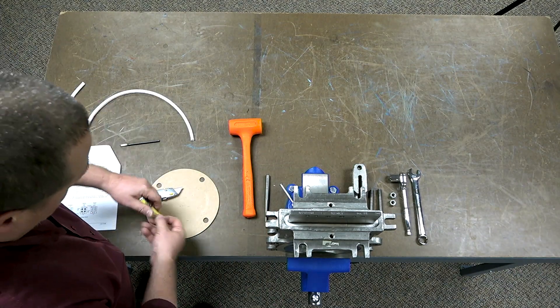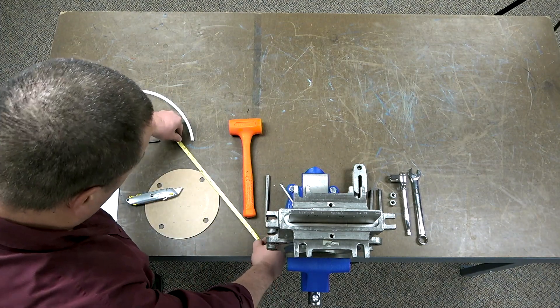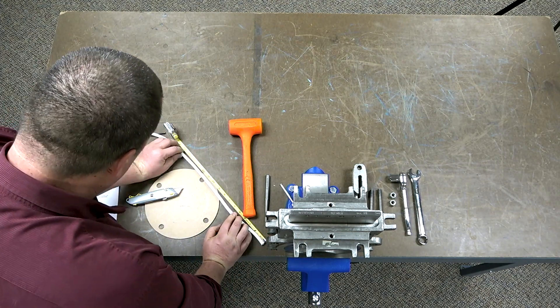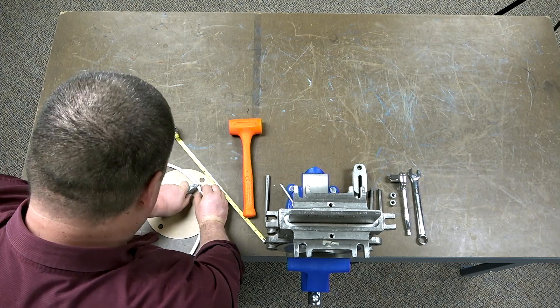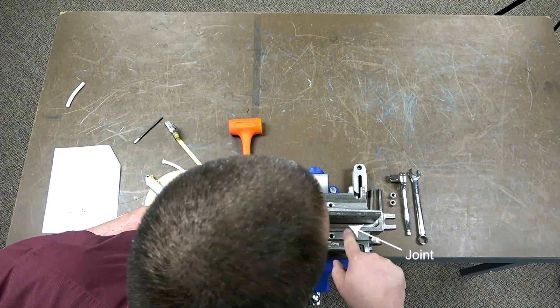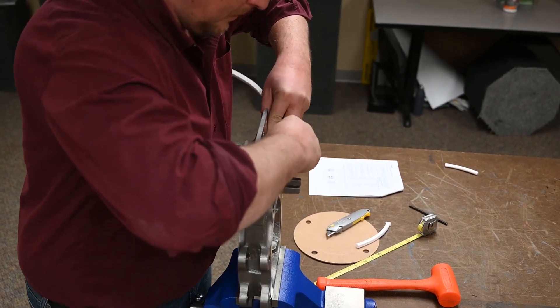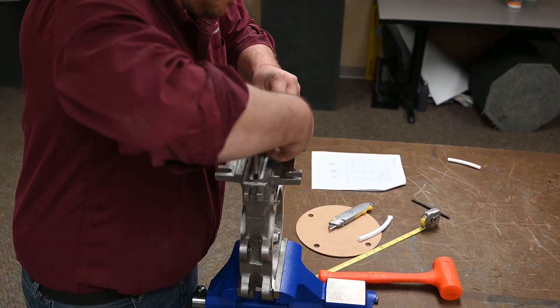Next, measure and cut the last layer of packing. Wrap the last layer around the gate with the joint staggered from the previous layer and tamp it down with the square end punch and rubber mallet.